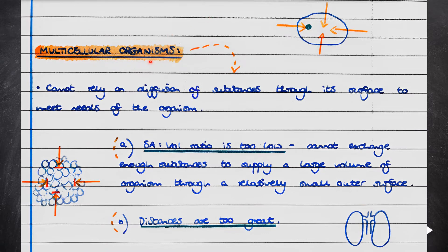Multicellular organisms, on the other hand, cannot rely on diffusion of substances through their surfaces to meet the needs of the organism. The surface area to volume ratio is too low, meaning that the organism cannot exchange enough substances to meet the needs of a relatively large organism through a relatively small outer surface. Furthermore, the diffusion distances are too great.